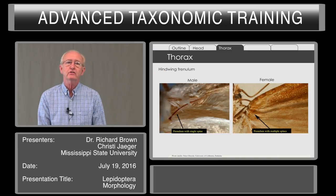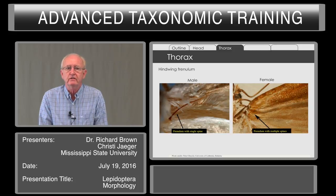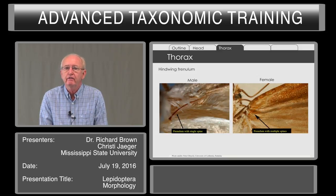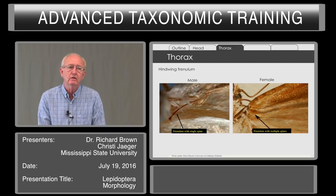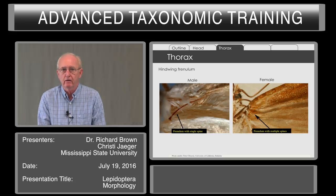The thorax also has the hind wings from the metathorax. You can tell differences between the sexes: males have a single spine coming from the base of the hind wing and hooking onto a little latch on the underside of the front wing, while females have three or multiple spines, with exceptions. So you can look at the underside and determine if it's a male or female.